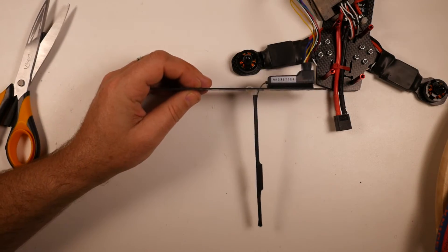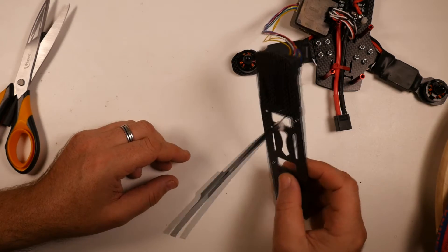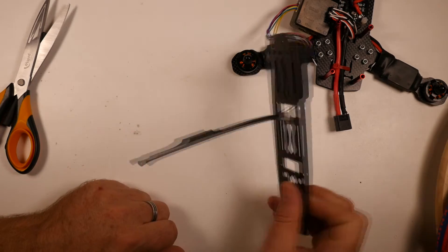Now you could do that with the soldering iron if you really wanted to, but the heat gun just makes it a bit easier. So now we have our antenna mounted on our frame.